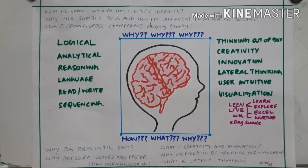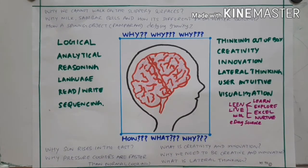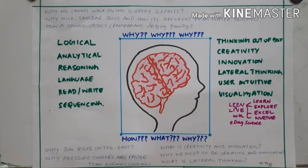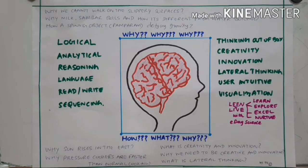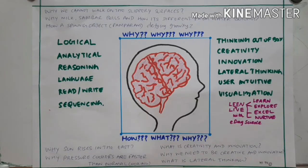Greetings dear friends. As part of Learning Live with Science Everyday channel, let's look at the science behind cooking 3 different food items. Let's observe their characters. The 3 food items are milk, plain water, and vegetable sambar.